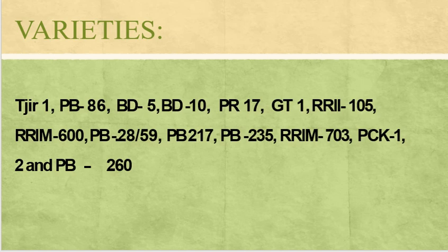There are different varieties of rubber: TG, PB6, PB86, BD5, BD10, PR17, GT1, RRII105, RRIM600, PB2859, PB217, PB235, RRIM 703, PCK1, PCK2, and PB235. The high-yielding variety is RRII105, which stands for Rubber Research Institute of India 105. The latex yield is highest from this variety.